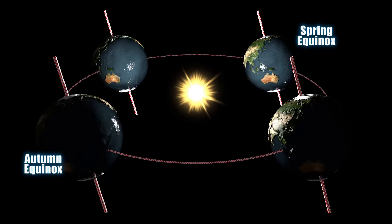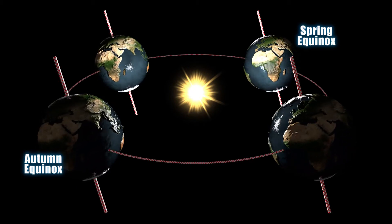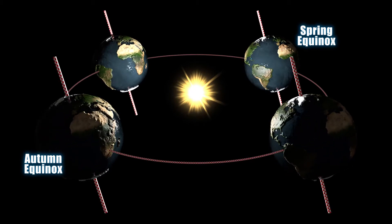Equinox is the time of year when day and night is equally long, all over the world. It happens in late March and September.